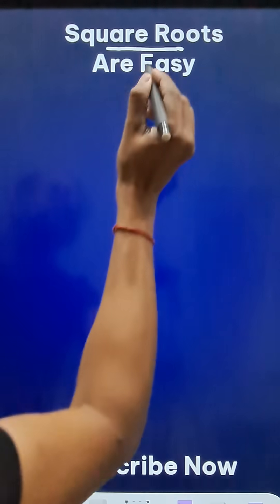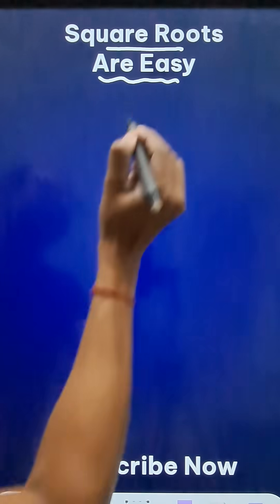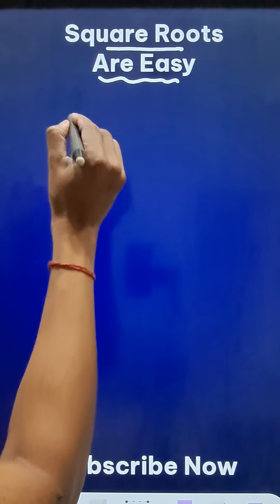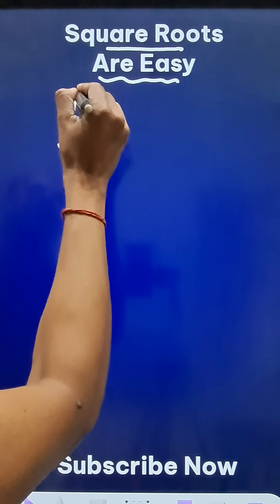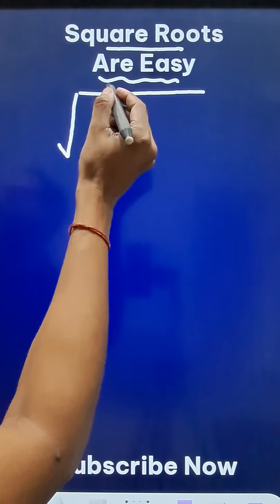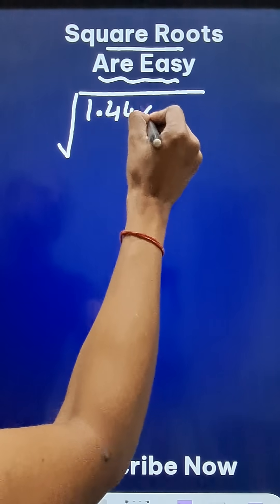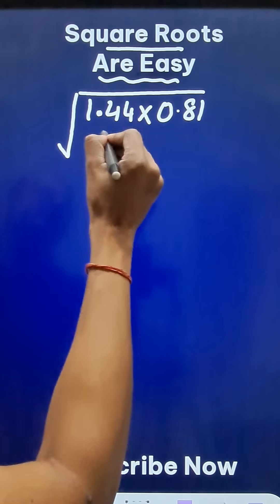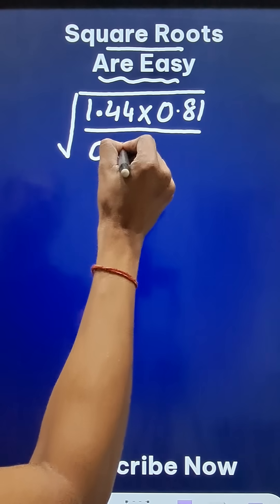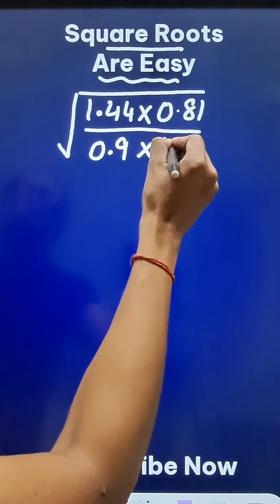Dealing with square roots can sometimes be tricky, but let's make it a little easier for all of you. Suppose you have a big square root problem where we have some numbers in the numerator in decimals like 1.44 times 0.81, and in the denominator you have 0.9 and 3.6.